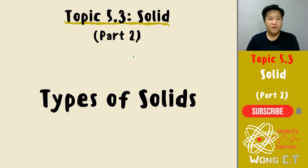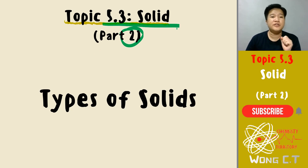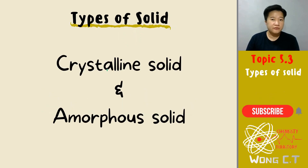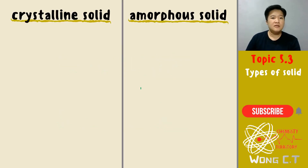Hi guys, welcome back to Wong Chemistry Channel. This is the Part 2 video of 5.3 Solid. In this video we are going to discuss the types of solid — there are two different types: your crystalline solid and your amorphous solid.